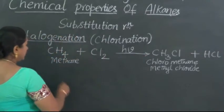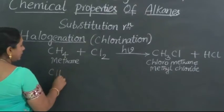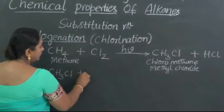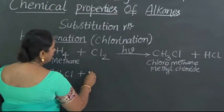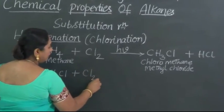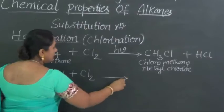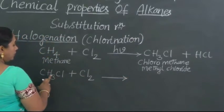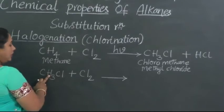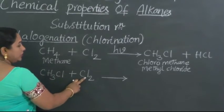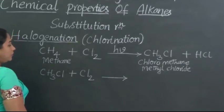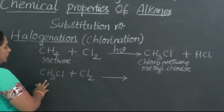This proceeds. So in the next step, this chloromethane which is obtained in step 1 will undergo further chlorination. Now what happens? One more chlorine atom from this molecule will replace one hydrogen, and the hydrogen which comes out here will again combine with the second chlorine atom forming HCl.